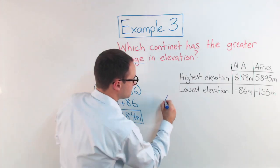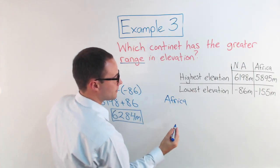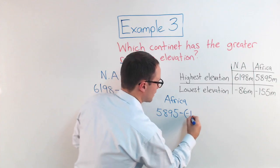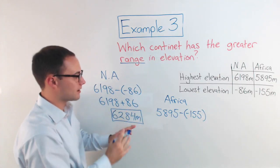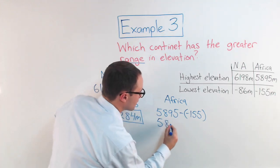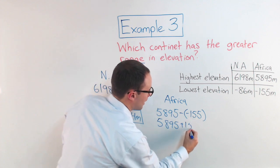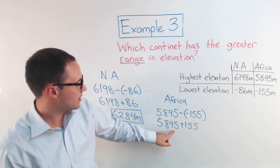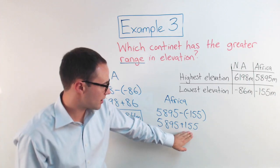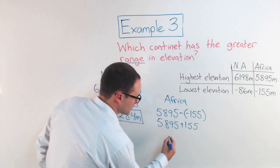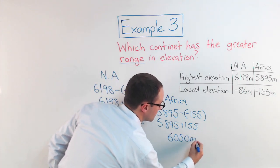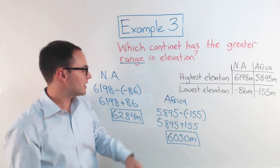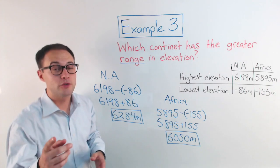Let's do the same for Africa. So, for Africa, we've got the highest, which is 5,895 meters minus negative 155. Same thing. I'm going to change it to an addition problem. 5,895 plus its opposite, which is positive 155. And if I add those two together, the sum, let's see, take 5 away, that would make 5,900 plus another 100 would be 6,000 even, and then I'd have 50 left. So, 6,050 meters. So, the question, which continent has the greater range in elevation? North America. Here's one more problem to try on your own.